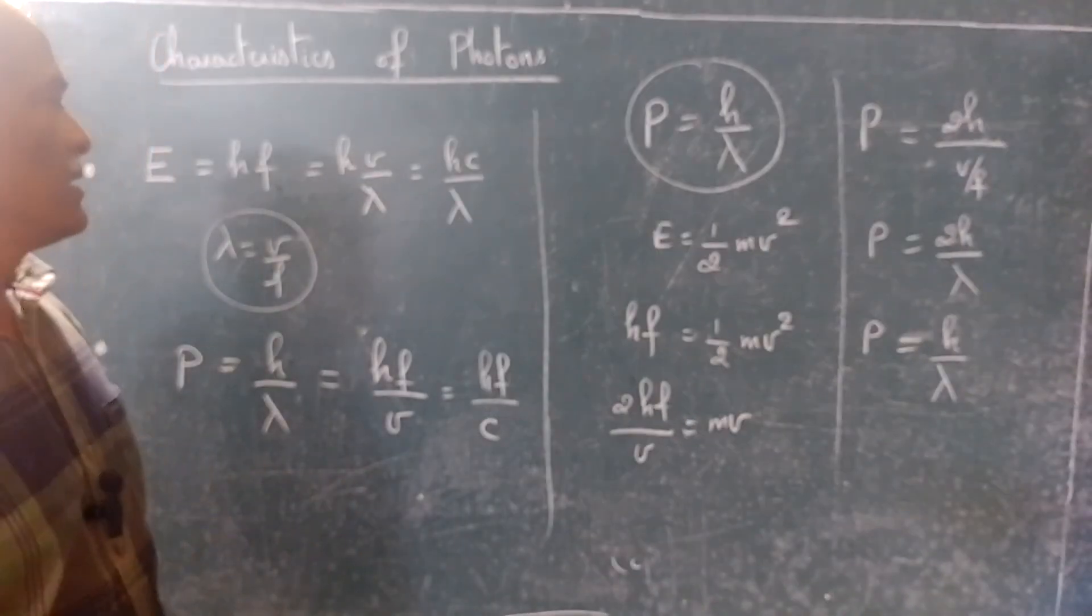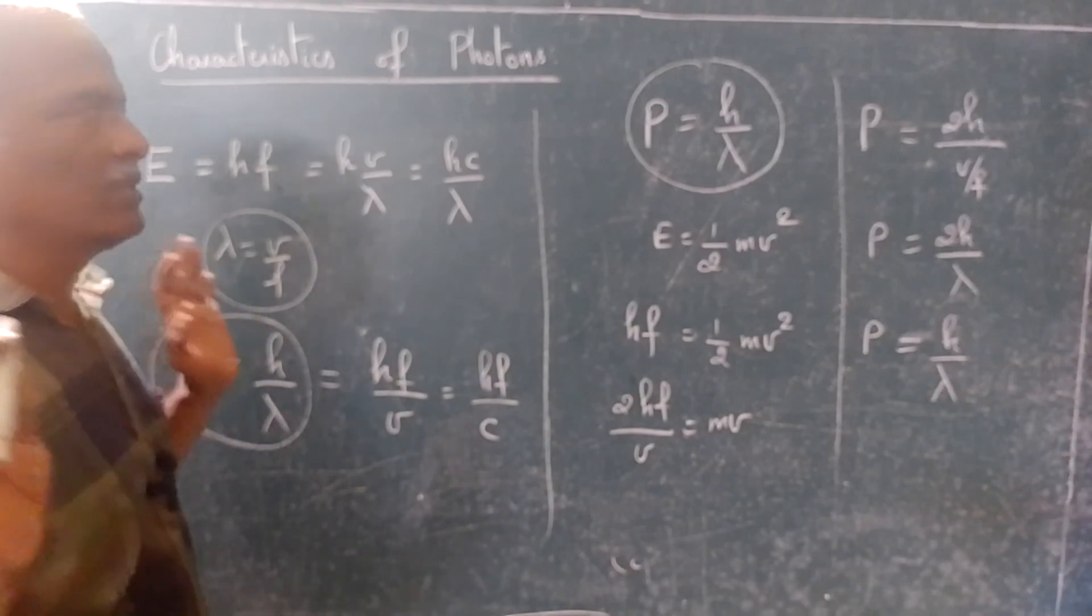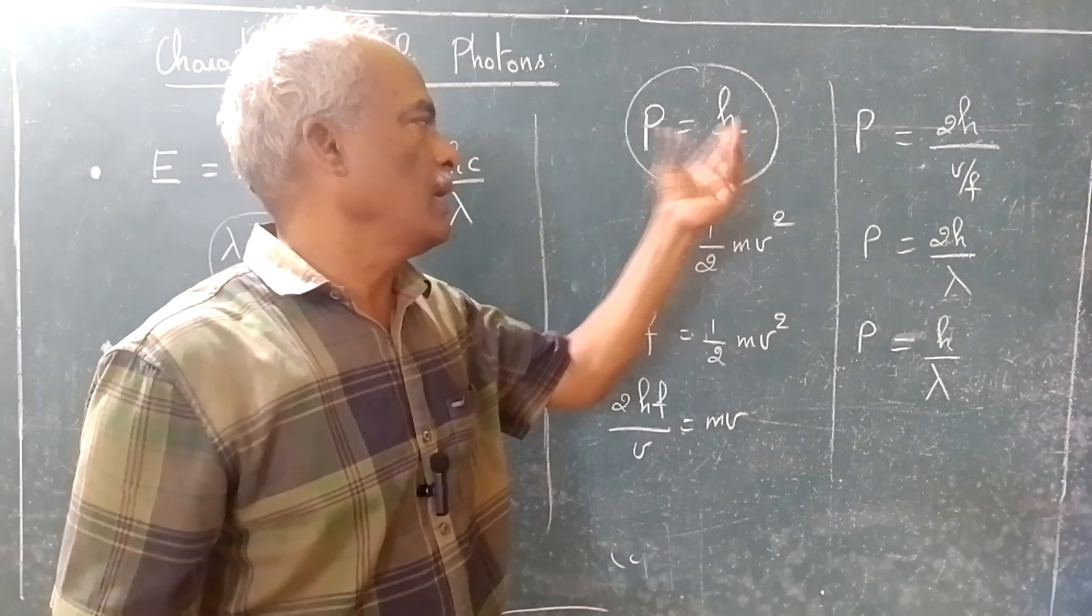In that, we said the momentum is equal to h by lambda. Whether this formula is correct or not? Momentum is equal to h by lambda.